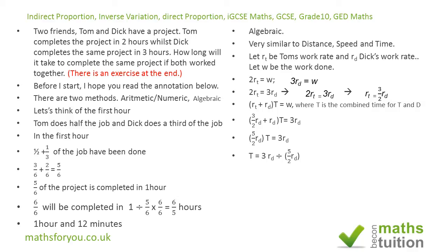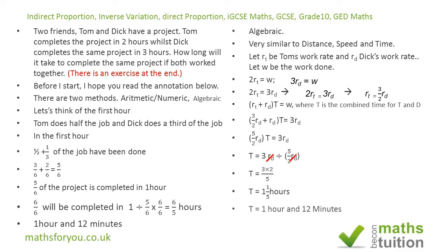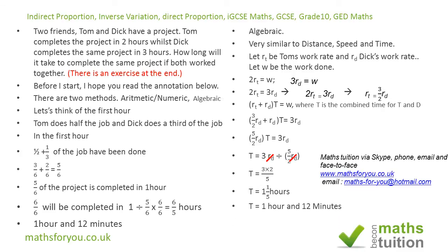So we have five-over-two r-sub-d times t equals three r-sub-d. Isolating t and cancelling r-sub-d, we get t equals three times two-over-five, which equals six-over-five — one hour and 12 minutes. This confirms the numeric method result.